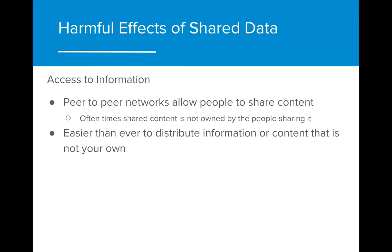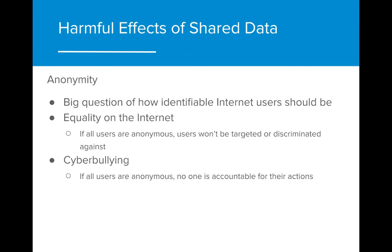It's easier than ever to distribute information or content that is not your own, such as copyrighted works of art or copyrighted software. We can tell who internet users are by the data they share. How identifiable should internet users be? On one hand, anonymity supports equality for all on the internet — if all users are anonymous, users won't be targeted or discriminated against for their gender or race because that information won't be available. However, having complete anonymity provides opportunities for cyberbullying. If all users are anonymous, no one is accountable for their actions.